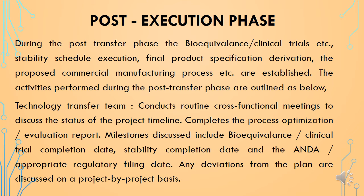The third basic element is the post-transfer phase, during which bioequivalence or clinical trials, stability schedule execution, final product specification derivation, and the proposed commercial manufacturing process are established. The technology transfer team conducts routine cross-functional meetings to discuss project status and completes the process optimization or evaluation report. Milestones discussed include bioequivalence and clinical trial completion dates, stability completion dates, and ANDA or appropriate regulatory filing dates. Any deviations from the plan are discussed on a project-by-project basis.